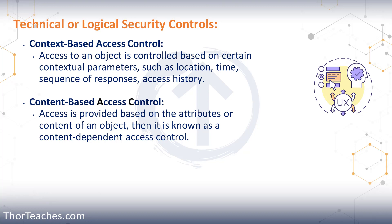In context-based access control, access is based on certain contextual parameters — that's why it's context-based. We can give subjects access based on their time or location, a sequence of responses, their access history, or some other context. At one bank, the credit card department could log in to those programs only within half an hour outside of their normal work hours, and only from PCs at that location. It could also be a challenge-response mechanism, like what is your favorite stuffed toy animal or where you like to go on vacation. Access is granted based on the context and what they're trying to access. If any of those parameters are not met, access is denied. Context really just means circumstances — if the circumstances aren't right, you don't get access.